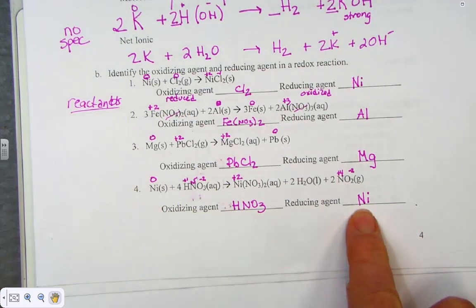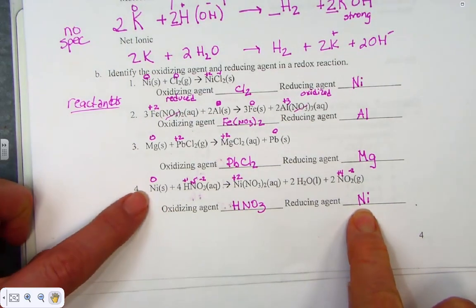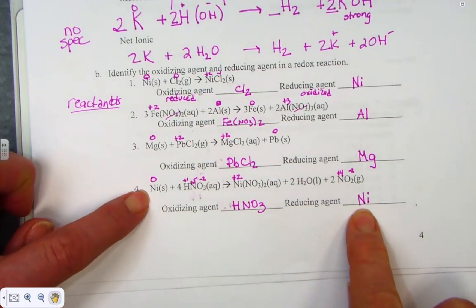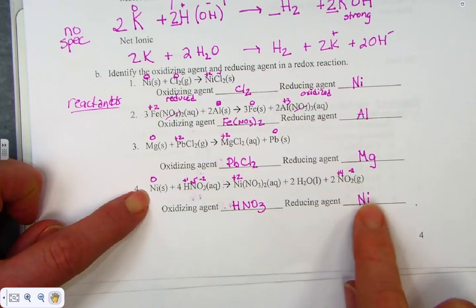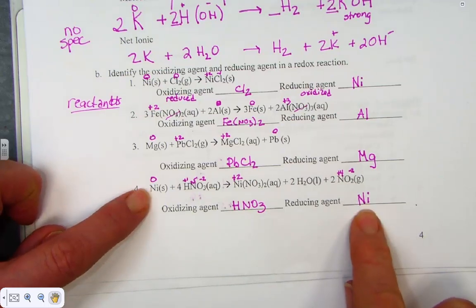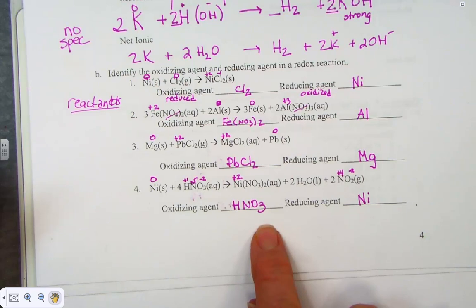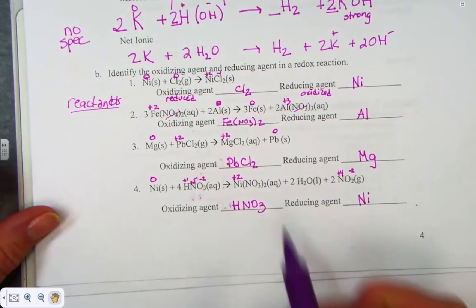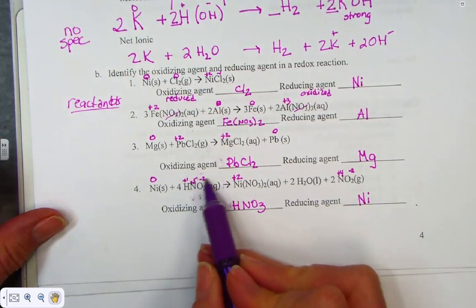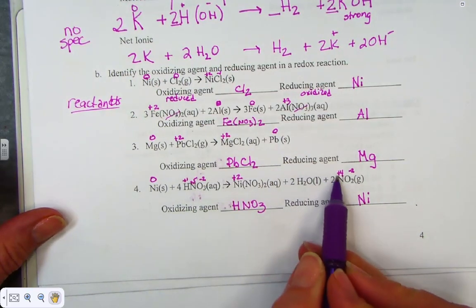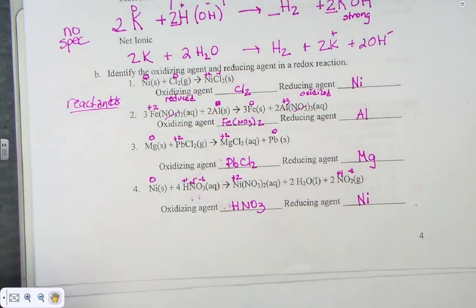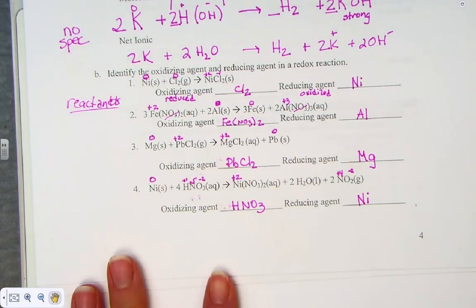Making it simple: once I labeled the first reactant, nickel, as the reducing agent, the only other choice for the nitric acid was to be the oxidizing agent. Nitrogen moved from plus 5 to plus 4 — reduction — therefore we call it the oxidizing agent.